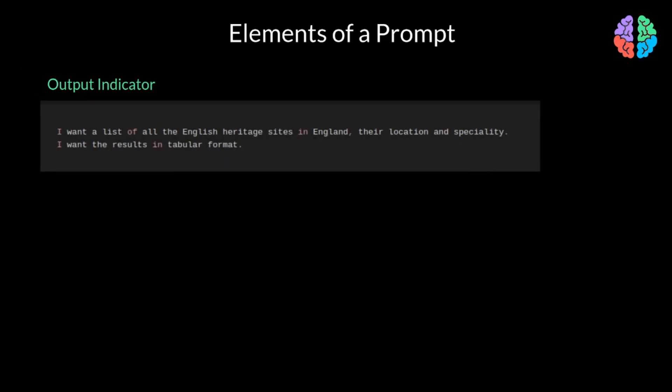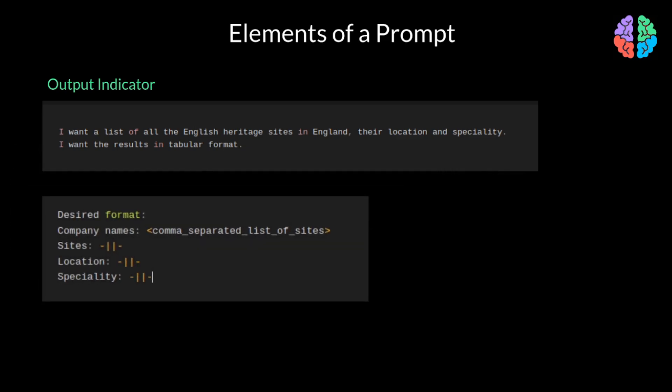As part of the prompt, you can also instruct on the format in which you wish to see the output. And so, a prompt can optionally have an output indicator. For example, you can ask, I want a list of all the English heritage sites in England, their location and their speciality. I want the results in tabular format. Or if you want even better response, you can enter the desired format with this syntax to indicate you wish to see columns and rows in the output.